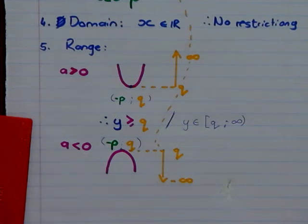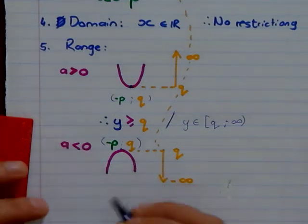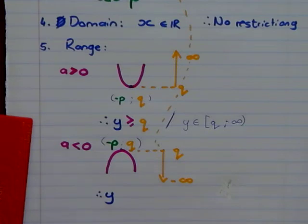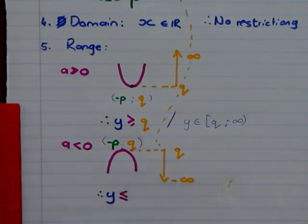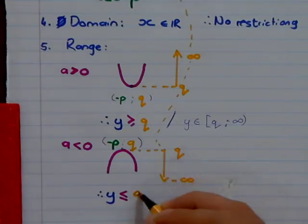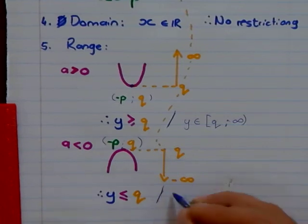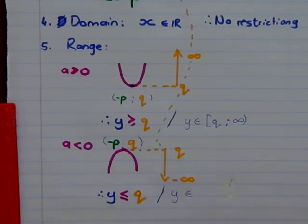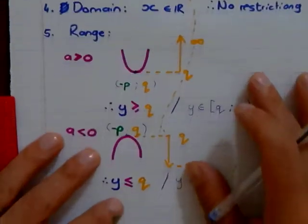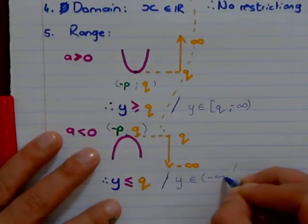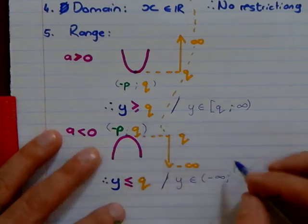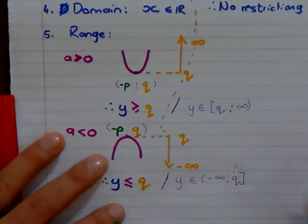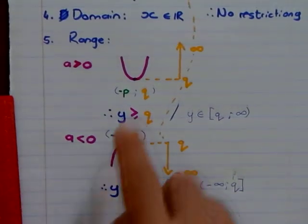So therefore, if I want to write this, the range of a negative graph, we know that y is going to be a sad face. So therefore, it's small and equal to my q value. If you don't want to write this format, you can write y as an element. It starts from negative infinity, always start at the smallest value up to the highest value, and that's my q.